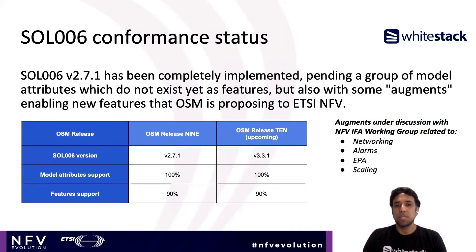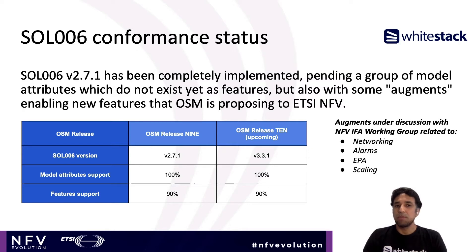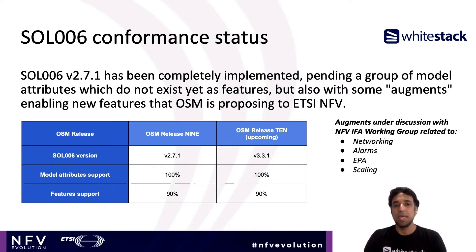Regarding SOL6, today OSM understands the full SOL6 model in version 2.7.1 and implements most of them in actual features, following field-based priorities. In the upcoming release, we will support the modifications introduced up to SOL6 version 3.3.1. We are also proposing some augments to the NFV IFA working group related to networking, alarms, enhanced platform awareness, and scaling.